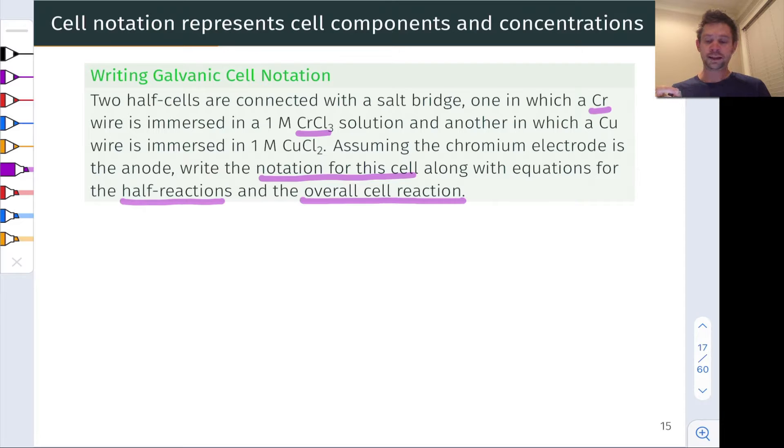We're told that the chromium electrode is the anode. So I'm going to go ahead and color code as we've been doing and underline the anode components in blue. Chromium metal and CrCl3 solution are our anode components. And the cathode components then by default are copper metal, a copper wire, and one molar copper chloride solution. Let's go ahead and underline that concentration as well for the chromium-3 solution since that's going to be important in the cell notation.